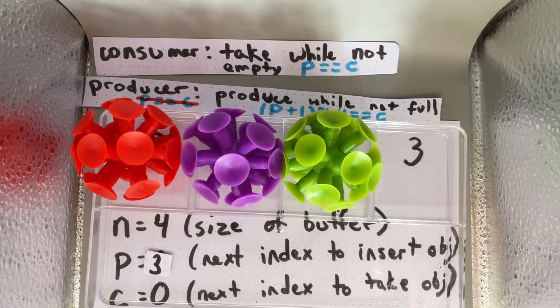We are able to make a solution for the producer-consumer problem that has an algorithm where we take objects out so long as the buffer is not empty, and we put objects in as the producer so long as the buffer has less than n minus one objects in it.